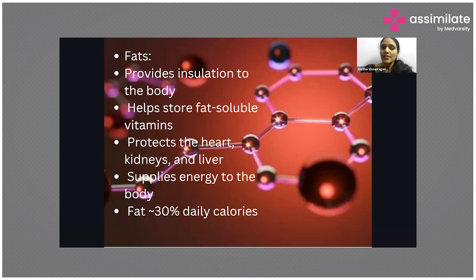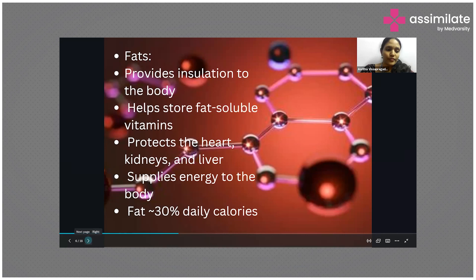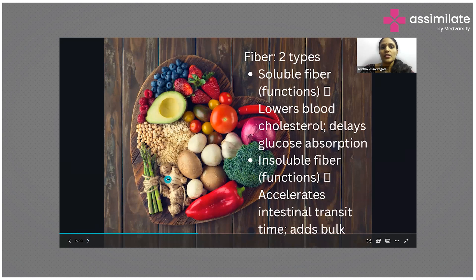Sources of fat include ghee and oils from seeds — rice bran oil, coconut oil, groundnut oil, and sesame seed oil. Nuts like almonds, walnuts, and cashews are primarily rich in fats with smaller amounts of protein. Certain fish like salmon and other seawater fish contain good fats like omega-3. Vegetable oils also contain fats.